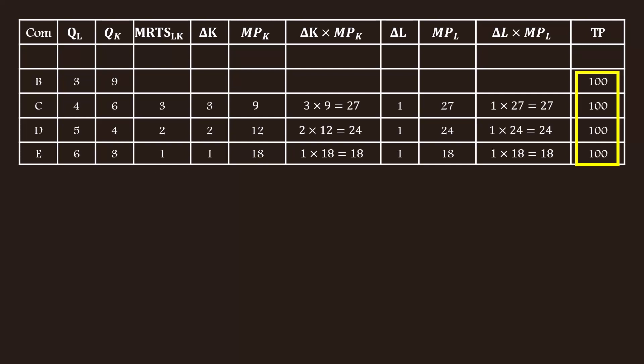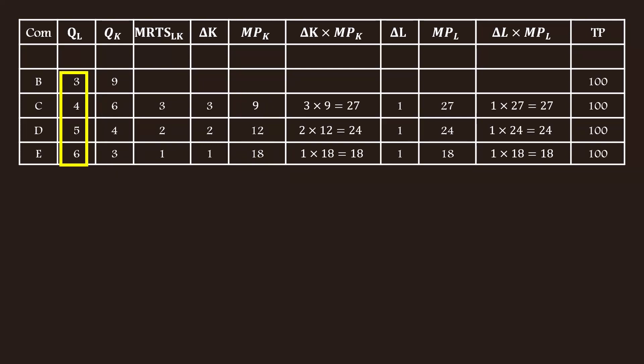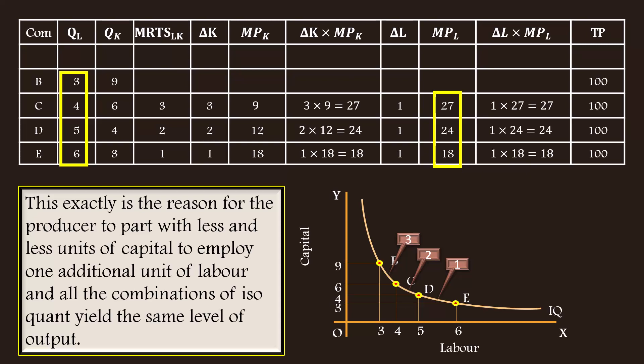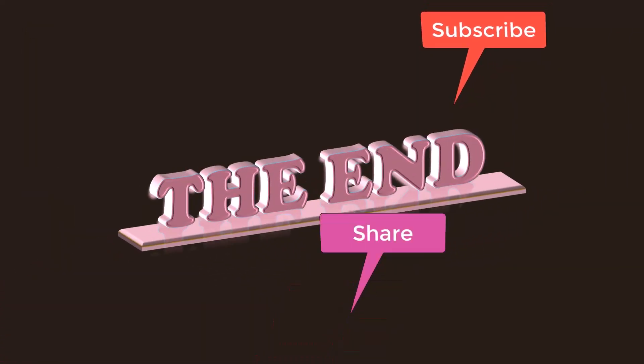What is to be noted here is this: when number of units of capital decreases as 9, 6, 4, and 3 units, its marginal product increases as 9, 12, and 18. When the number of units of labor increases as 3, 4, 5, and 6 units, its marginal product falls as 27, 24, and 18 units. This paves the way to compensate the reduction in output by an increase in output. This is exactly the reason for the producer to part with less and less units of capital to employ one additional unit of labor, and all the combinations of the iso-quant yield the same level of output. Our discussion ends here. We shall meet in the next video lesson.